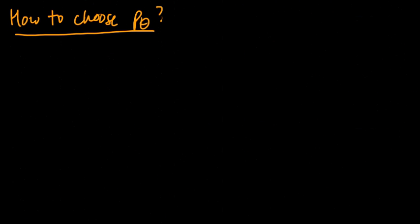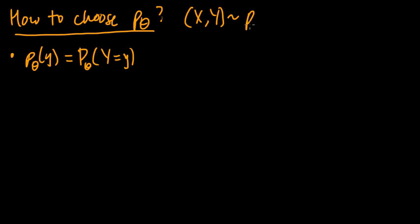So first, let's think about the marginal distribution on y. So for the y part, we have this marginal distribution on y. Remember, this is just the probability that a random variable y takes the value little y. So this is where x and y are distributed according to the joint distribution, P theta.